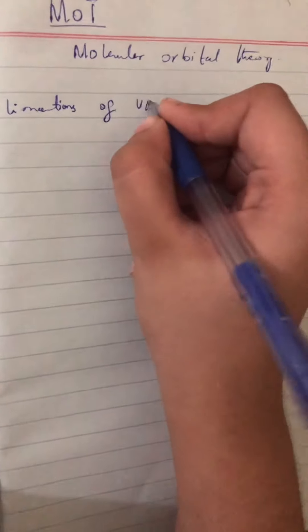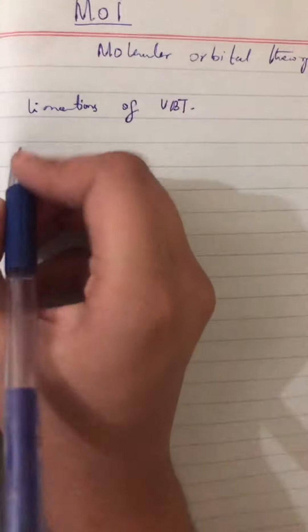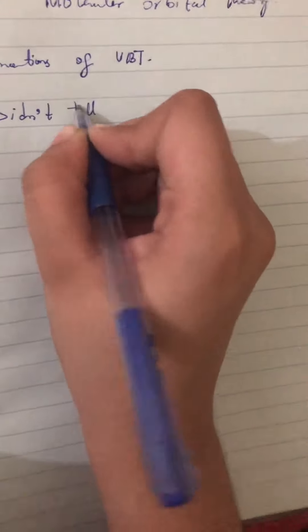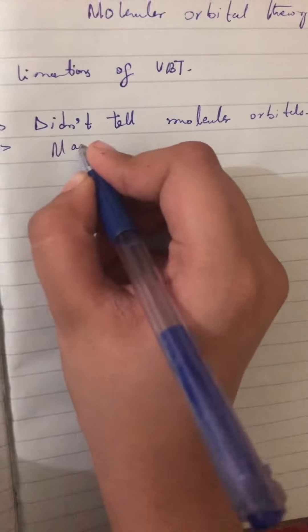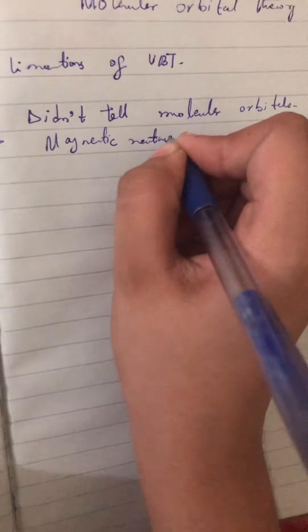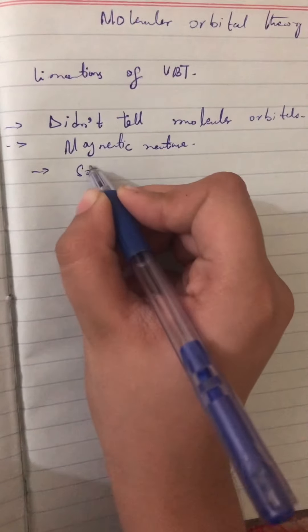Limitations or drawbacks of VBT: First, VBT did not tell about the molecular orbitals — it only told about atomic orbitals. Second, it did not tell about the magnetic nature of molecules. Third, it fails to describe the delocalization of electrons in a molecule. And fourth, it did not tell about the stability of molecules.